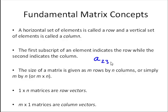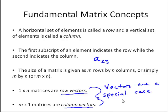A 1 by n matrix is a row vector, and an m by 1 matrix would be a column vector. So you can think of vectors that we've already talked about as a special case of matrices with only one row or one column. A lot of the concepts we talked about with vectors are pretty much the same for matrices.